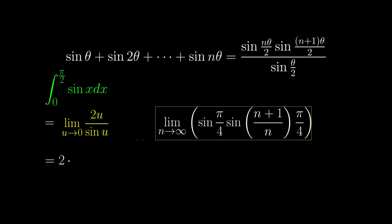The second limit is much easier, we just need to see that (n+1) over n tends to 1 when n tends to infinity, and so we have its limit to be sin squared π over 4, and since sin π over 4 is 1 over the square root of 2, the integral equals 1.